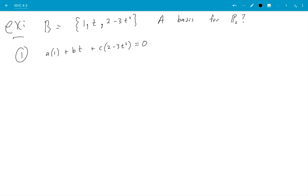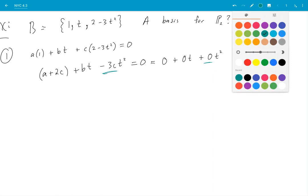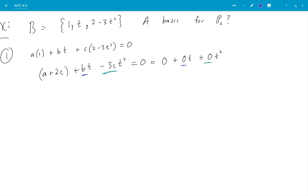So how do you do that? Well you say, let's collect like terms: a+2c plus bt minus 3ct² is equal to zero. Now I'm not sure how you did partial fractions back in Calc 2, but you can think of this as being kind of like what you did back then. Okay this zero is equal to 0 + 0t + 0t². So therefore, this coefficient must be the same as this one, this coefficient is the same as this one, and this coefficient is the same as this one.